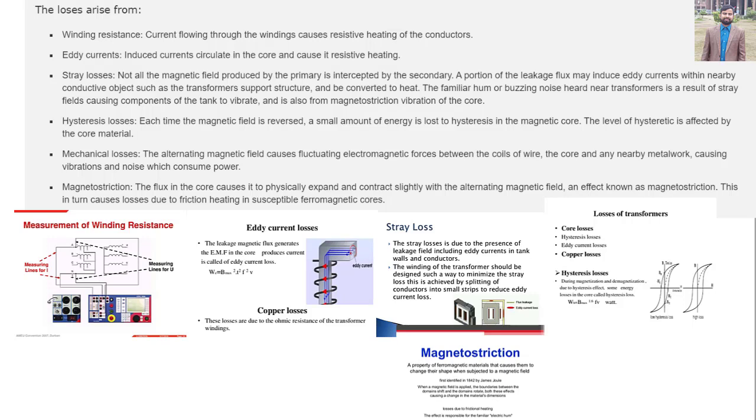the alternating magnetic field causes fluctuating electromagnetic forces between the coils of wire, the core, and any nearby metalwork causing vibrations and noise which consume power. Magnetostriction: the flux in the core causes it to physically expand and contract slightly with the alternating magnetic field, an effect known as magnetostriction. This in turn causes losses due to friction heating in susceptible ferromagnetic cores.